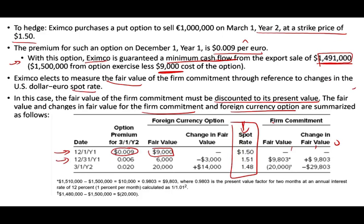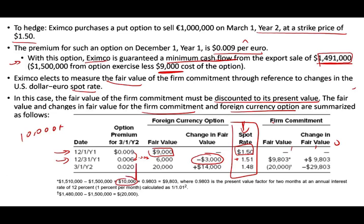By year-end December 31st, the option premium fell to $0.006 — down $0.003 — due to time decay. So the change in fair value of the option is negative $3,000; the option lost $3,000. However, the spot rate rose from $1.50 to $1.51, meaning the firm commitment went up in value by $10,000 (1 million euros × $0.01). Discounted to present value, the fair value of the firm commitment is $9,883.